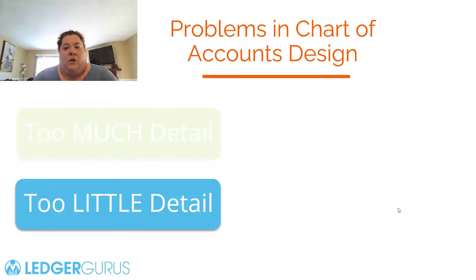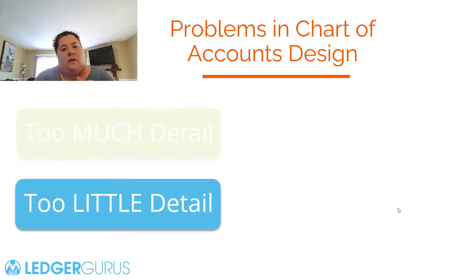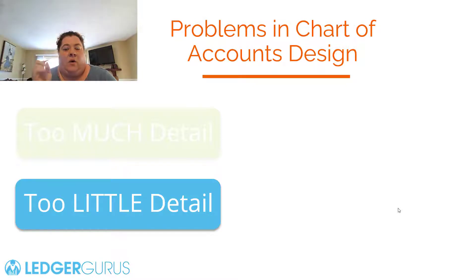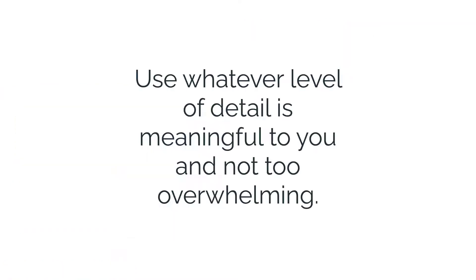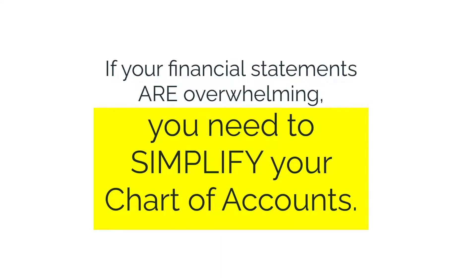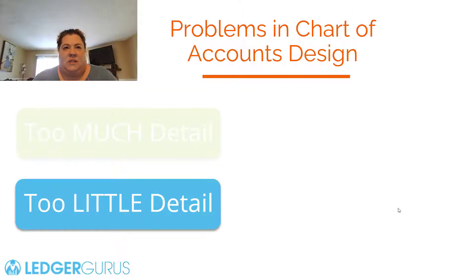Second is too little detail. You want to set up a chart of accounts that gives you the level of information that's actually important to you. For example, if it matters how much you're spending on your cell phone bill versus internet separately, have two categories. But if you want to combine them into 'utilities' or 'phone and internet,' great — whatever level of detail is meaningful but not overwhelming. If you open your financial statements and feel overwhelmed, simplify your chart of accounts. But if you feel like there are unanswered questions and things are buried in one category, create more categories.